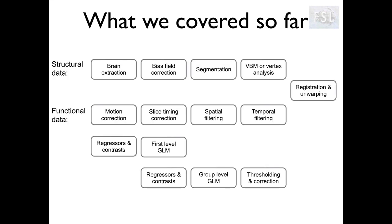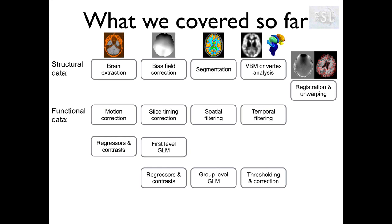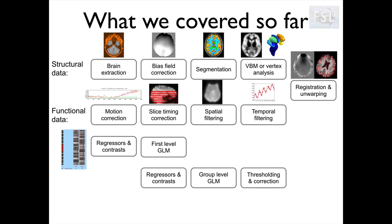Here is what we have covered so far in the course. We started with registration, then structural analysis, we talked about the fMRI pre-processing, single subject fMRI analysis, and then group level statistics and inference in the last session. What I'm going to do now is to regroup all these topics according to the generic blueprint and summarize some key concepts.